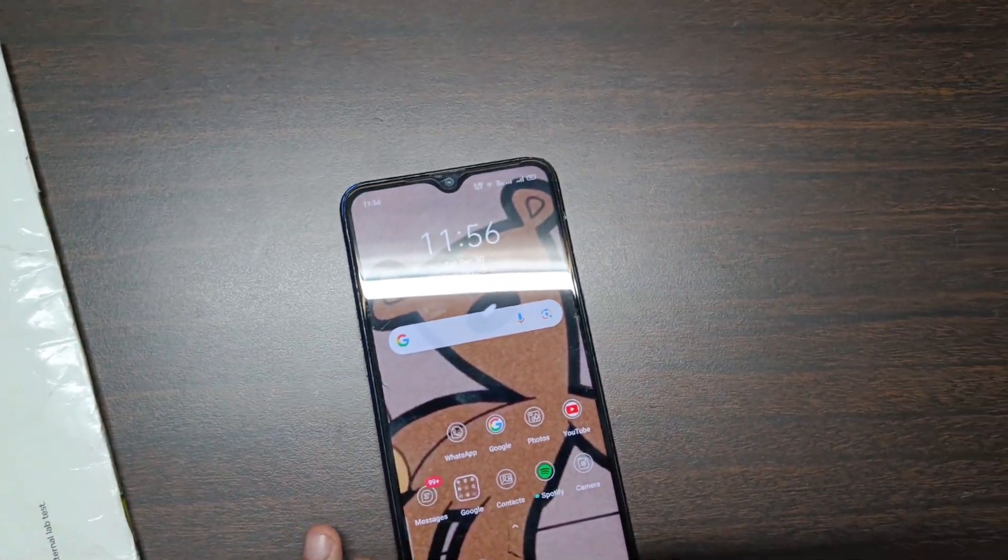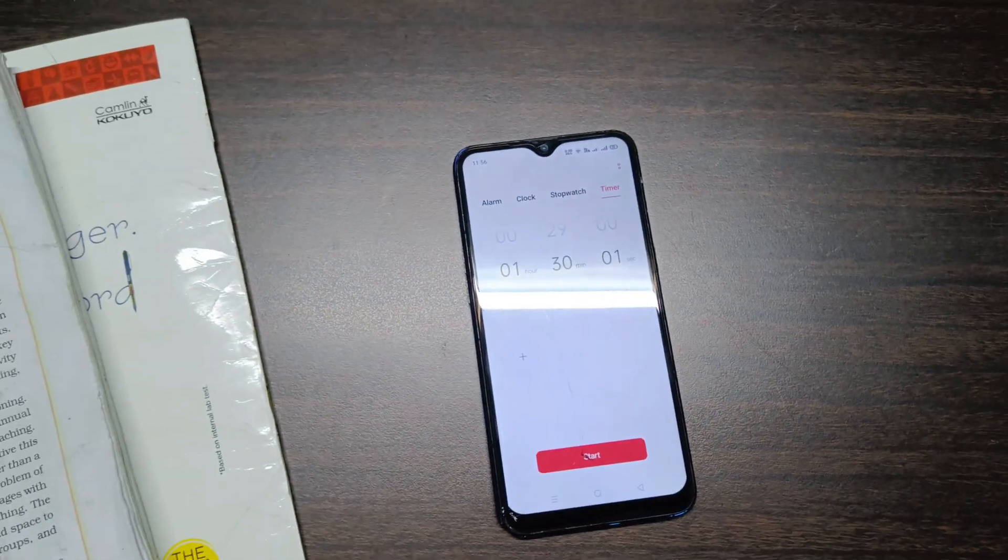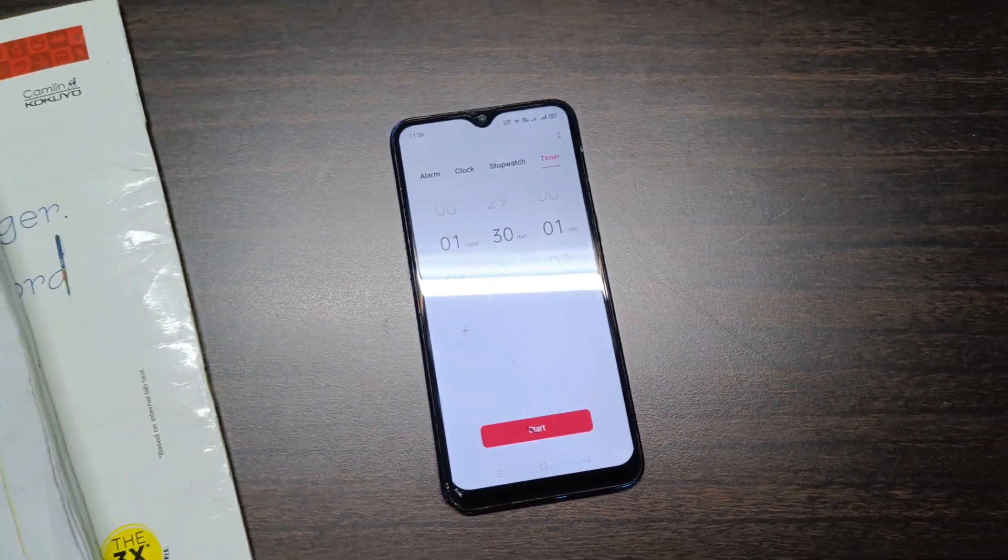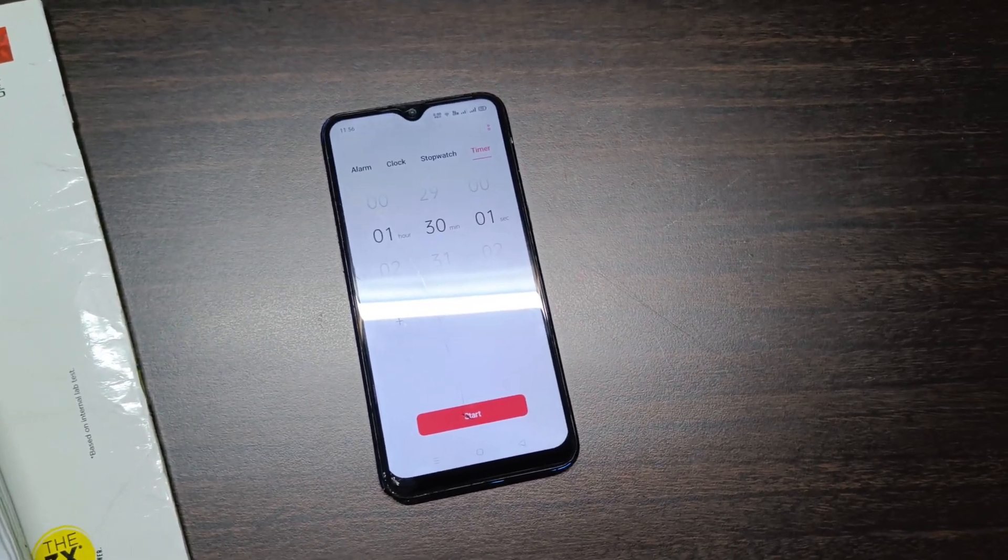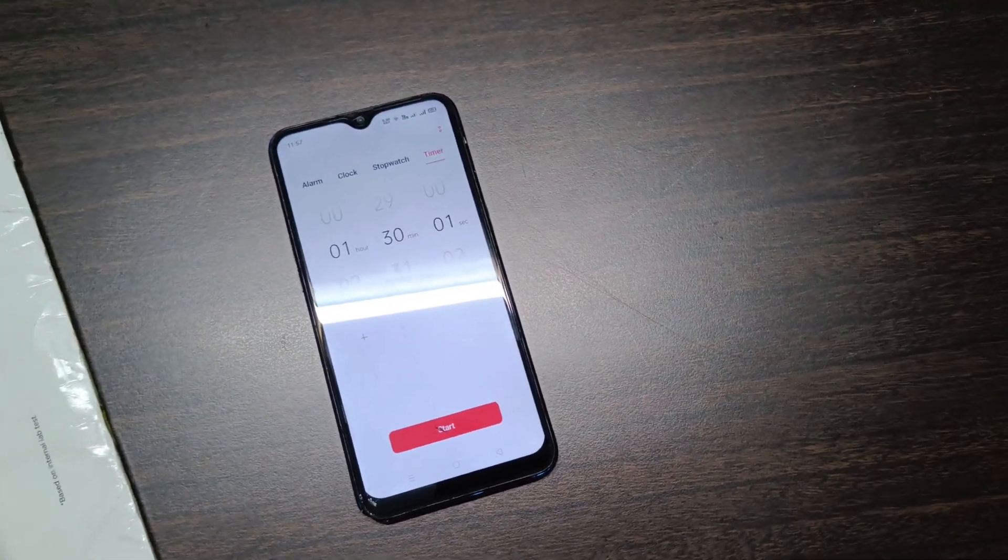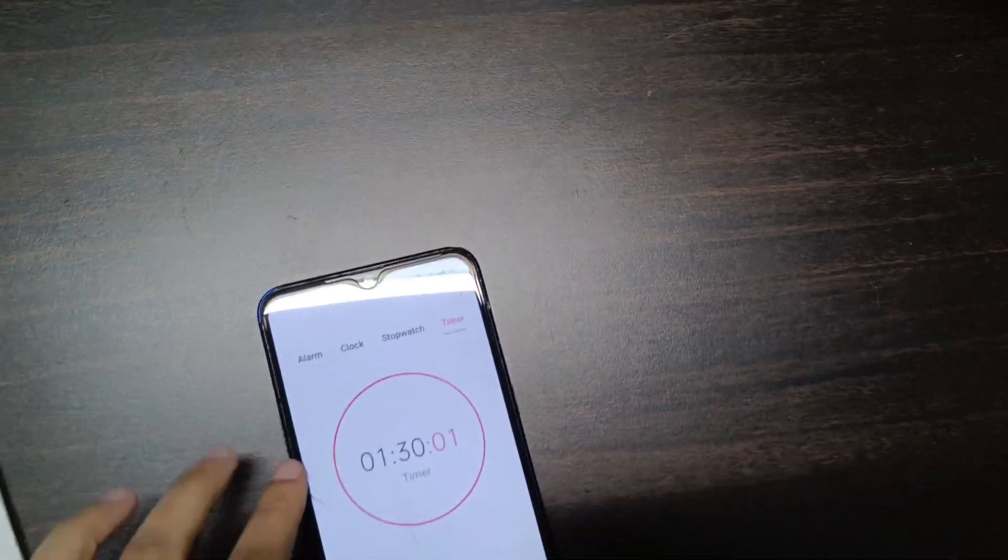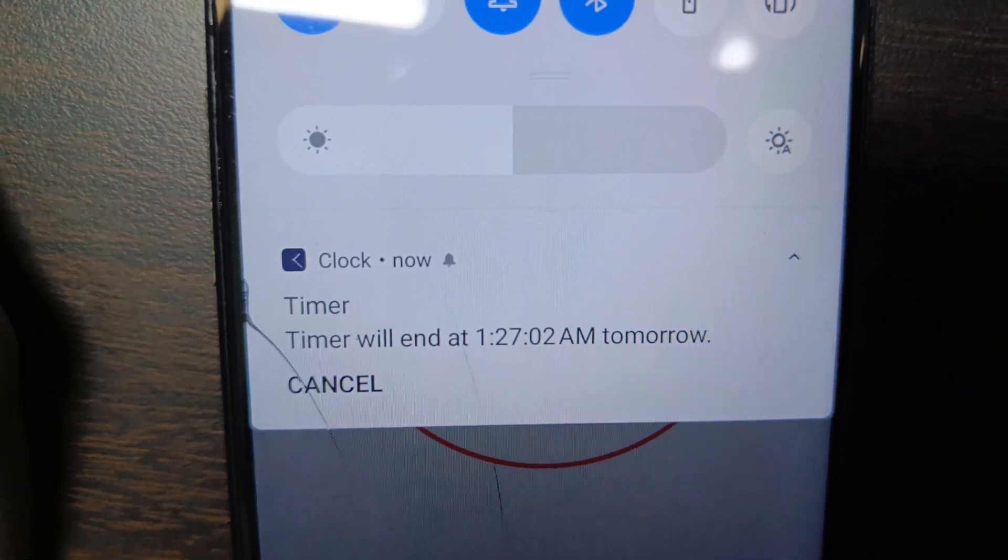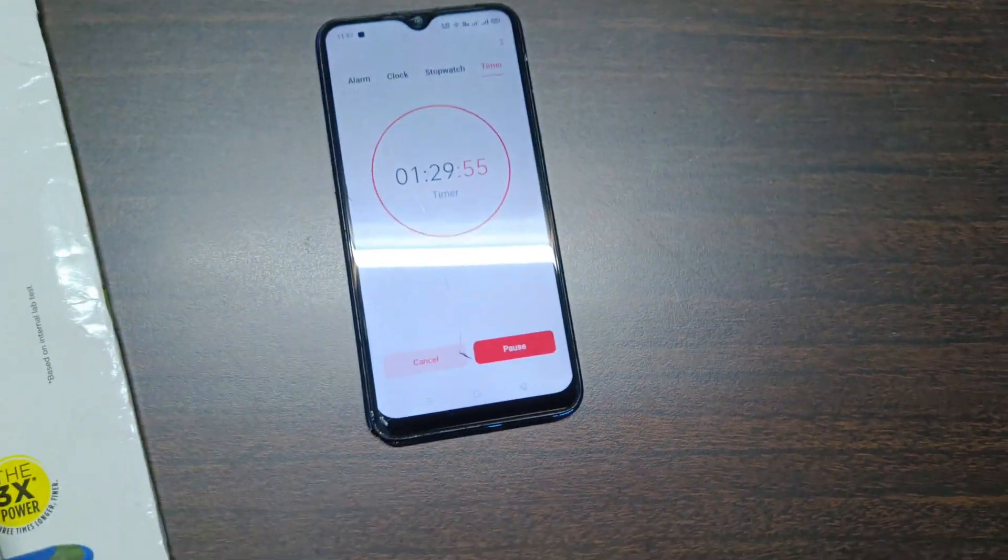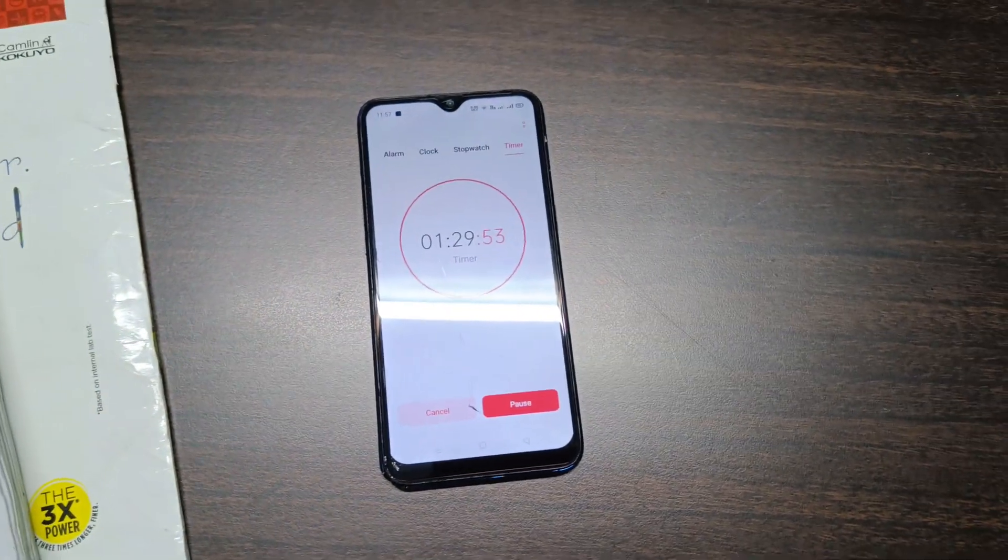It is currently 1:56. I'll place a timer of one hour 30 minutes. I'm left with two or three pages, so I'll read that first and after that I will start practicing the NCERT exampler. This timer will end at 1:27 AM. Let's start practicing science physics.